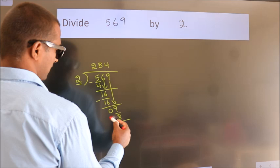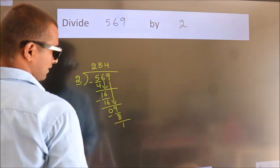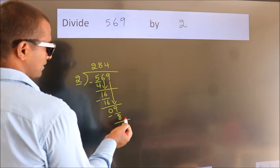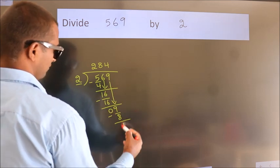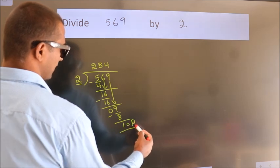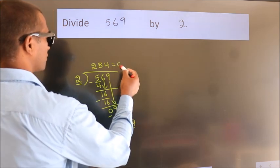Now we subtract. We get 1. No more numbers to bring it down. So we stop here. This is our remainder. This is our quotient.